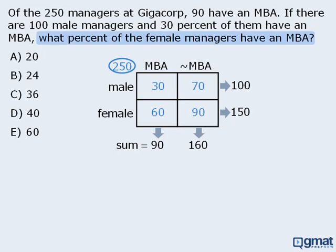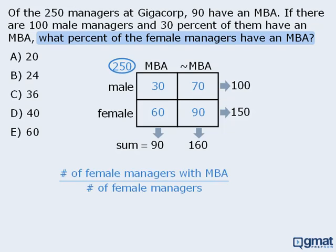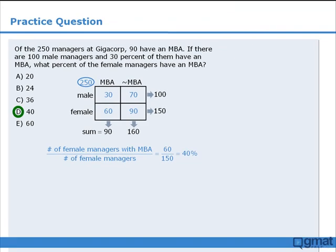The question asks: what percent of the female managers have an MBA? To find this, we need the number of female managers with an MBA and the total number of female managers. There are 60 female managers with an MBA, and 150 female managers altogether. This fraction equals 40%, so the answer is D.